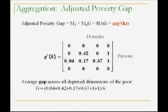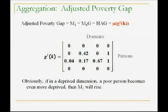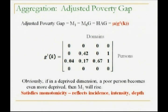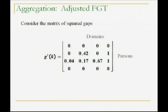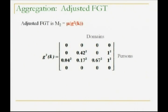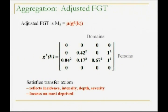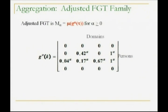What's really cool is M1 is just the mean of that matrix — take the entries, add them all up, divide by 16. That's the adjusted poverty gap, analogous 100% to the unidimensional case and easy to understand. Obviously, if in a deprived dimension a poor person becomes even more deprived, poverty will rise — it satisfies a form of monotonicity. Of course, we could also look at the squared gaps and take the mean of that matrix — that's M2, which reflects incidence, intensity, depth, and severity, focusing on the most deprived. Going to the next step with alpha, the generalization to FGT is complete.